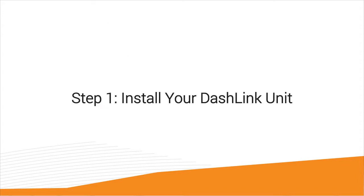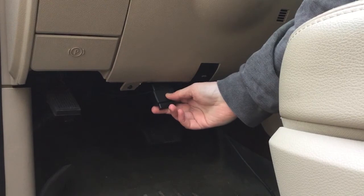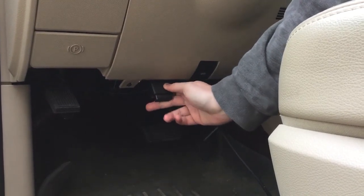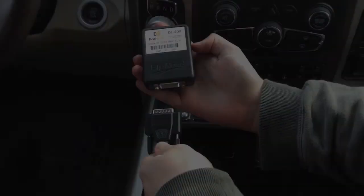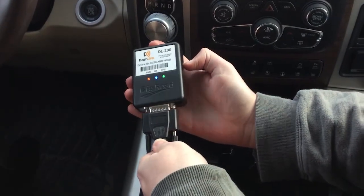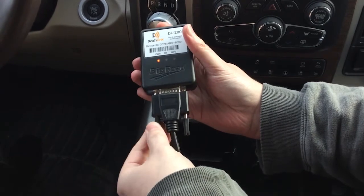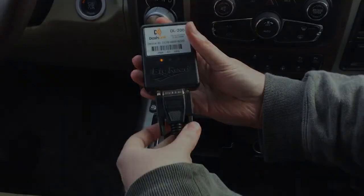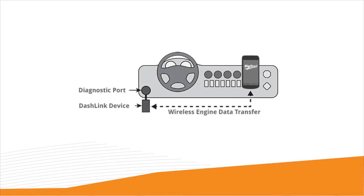Step one: install your Dashlink unit. Installation is pretty quick and easy. First, plug in your Dashlink cable to the ECM or diagnostic port of your vehicle and confirm that you've got a nice tight fit. Next, plug your Dashlink box into the other end of the cable and confirm the screws are tightened. The Dashlink will record engine time and drive time right from your vehicle's ECM or engine control module, which is basically an onboard computer in your vehicle.